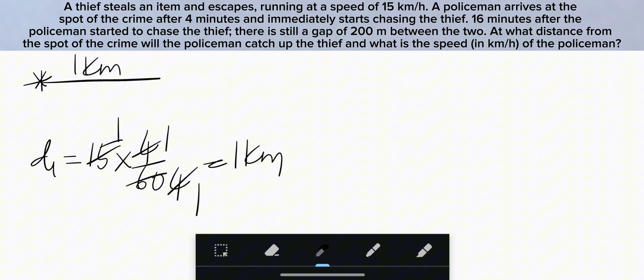After 4 minutes, police starts chasing at starting point and thief is 1 km ahead of police traveling with the speed of 15 kmph. Now after 16 minutes of chasing, still there is a gap of 200 meters between them.